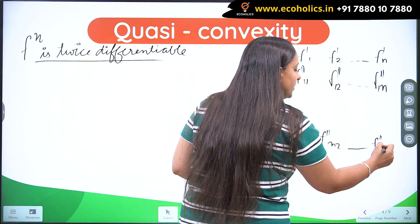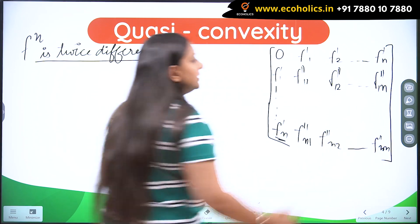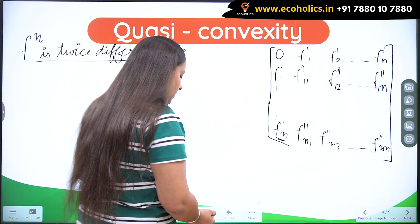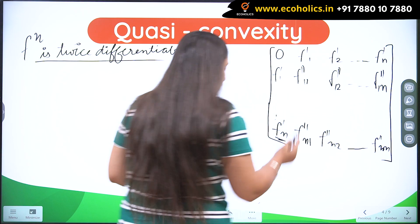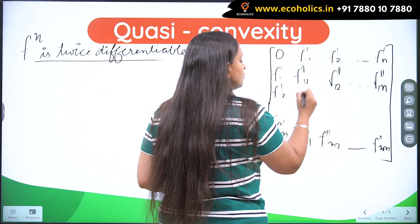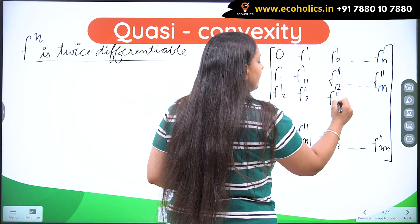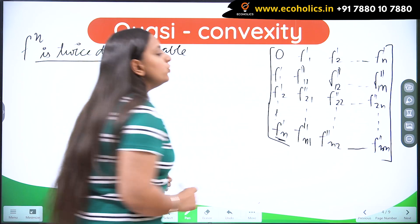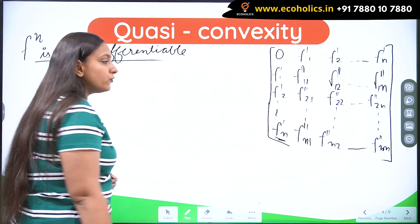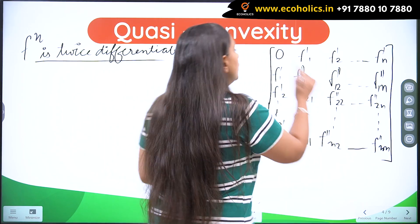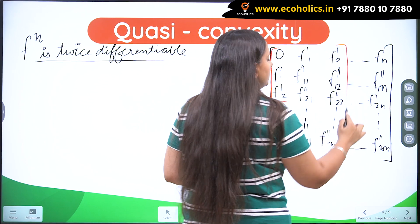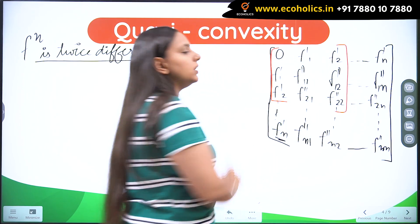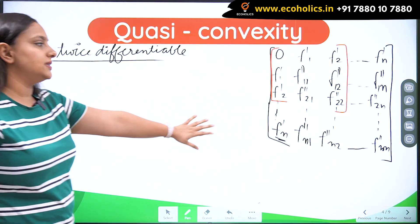This completes the bordered Hessian matrix. In most exams you will encounter a two-variable case. When it is a two-variable function, the matrix is limited to these nine components — three columns and three rows. The third row is f′₂, f″₂₁, f″₂₂.